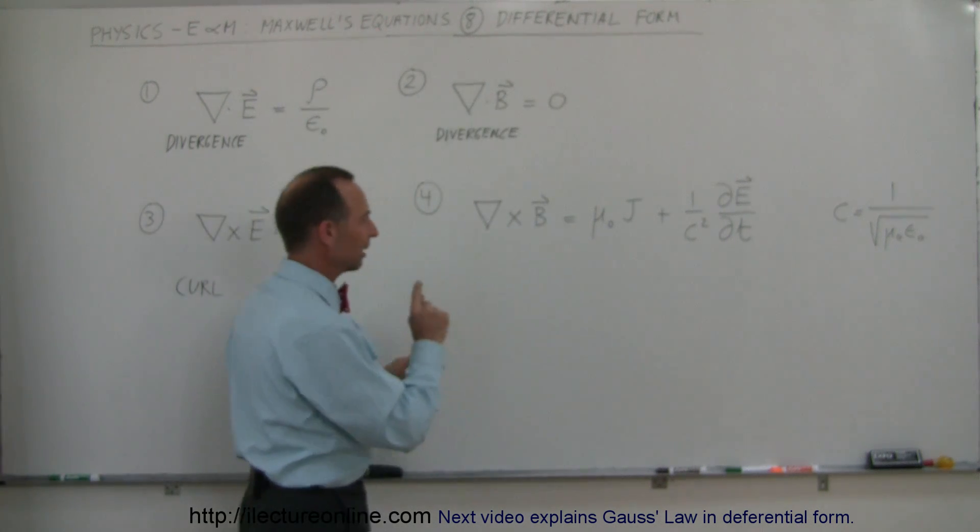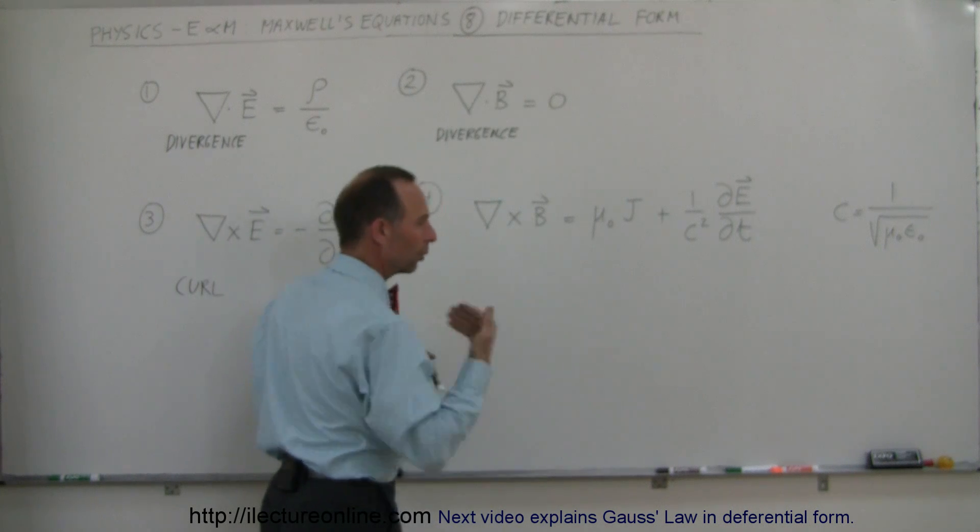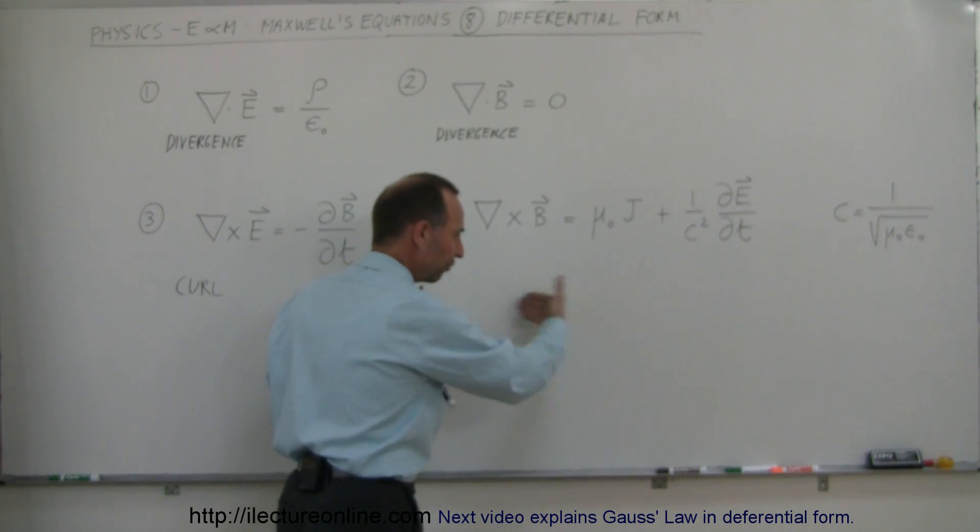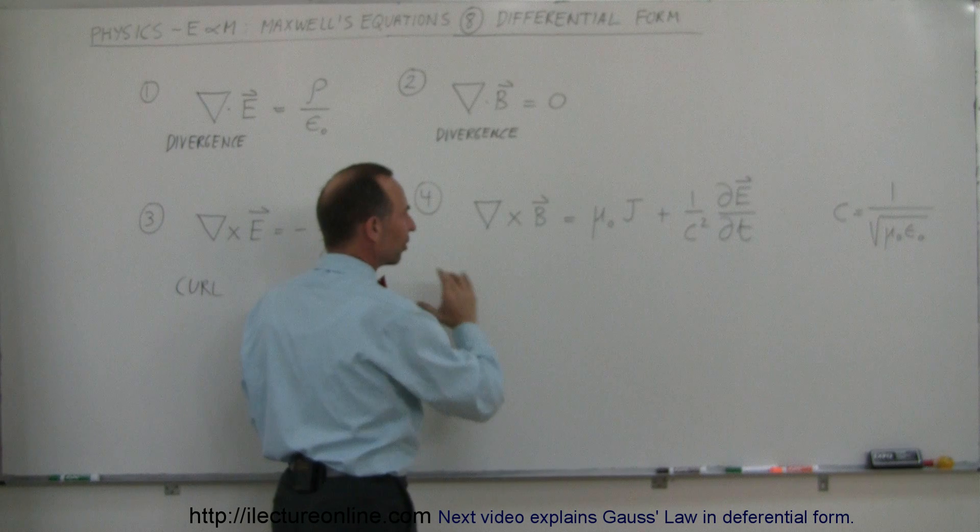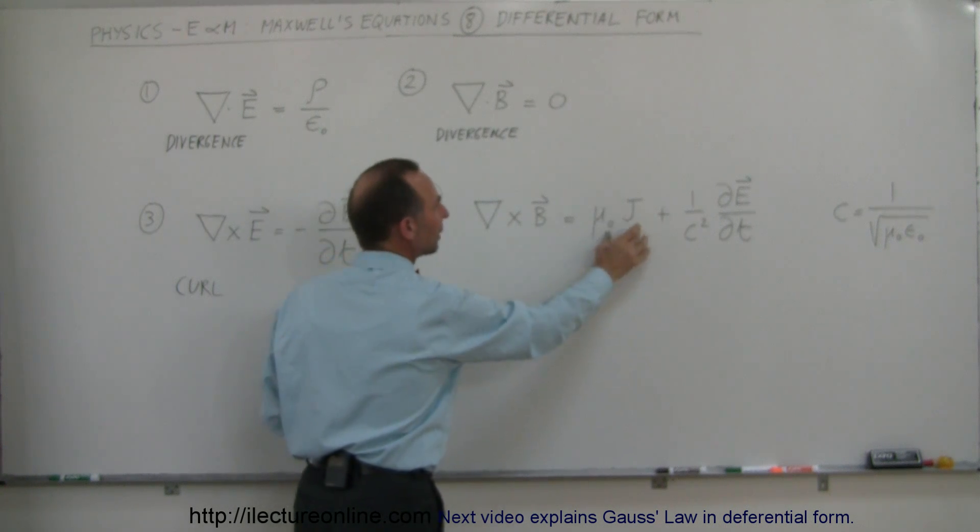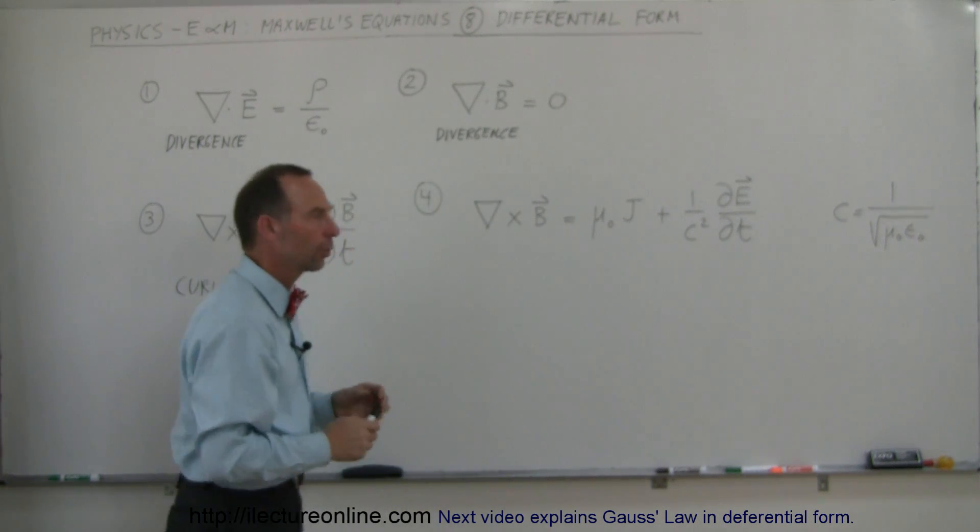And then finally same with the magnetic field. If we take the curl of the B field, again if we integrate along a curved path the B field will sum up to be equal to the charge inside, or I shouldn't say the charge,